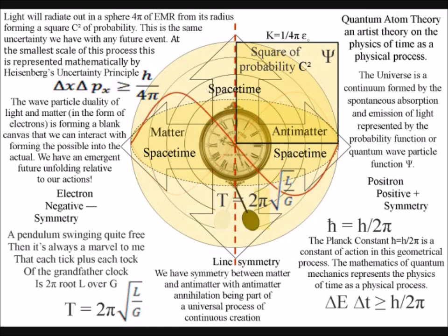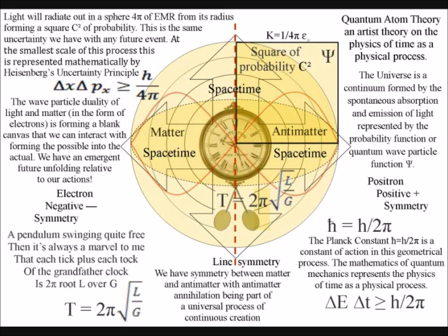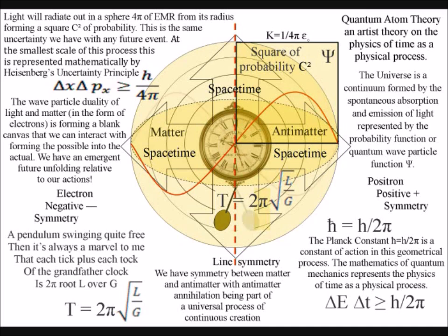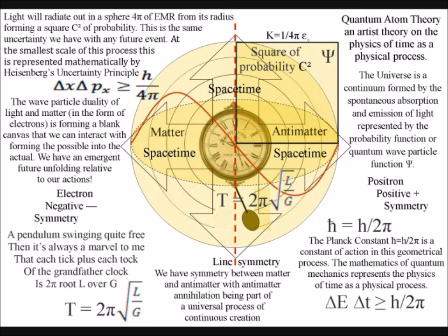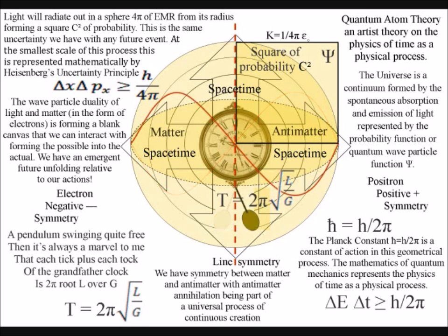We measure this process as the passage of time, with the interior of the sphere forming our three-dimensional space. Therefore, we have Heisenberg's uncertainty principle between position and momentum, with 4 pi in the equation representing the spherical geometry. If we reformulate the uncertainty using energy and time instead of position and momentum, we have 2 pi in the equation representing the surface of the sphere.